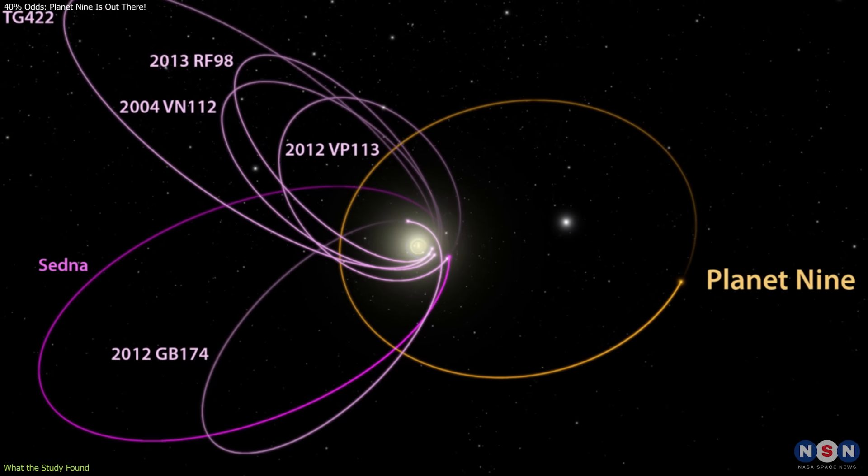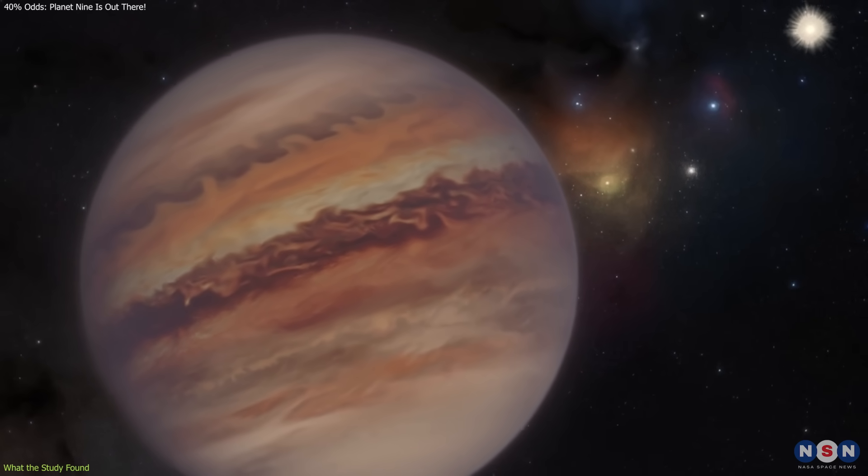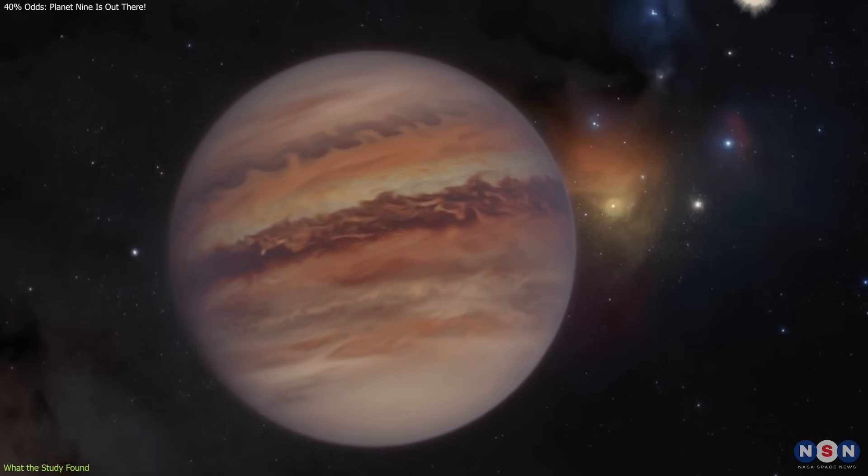Instead, they were pulled into a stable, wide orbit, thanks to the gravitational influence of nearby stars passing by during the system's infancy.